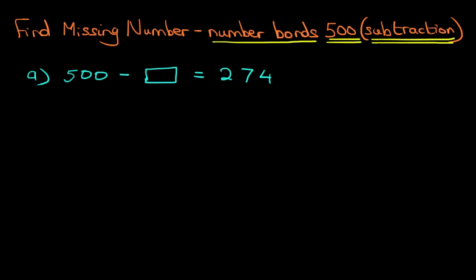500 minus something equals 274. Now, in previous tutorials, what we've done is we have swapped the missing number with the number on the right, and that would enable us to do the equation 500 minus 274. We're not going to do that this time. What we're going to do is we're going to add numbers to the number 274 until we get to 500.